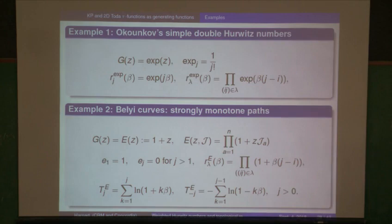The tau function is just the weighted sum over all constellations with these weights. That's the combinatorial interpretation of the tau function.